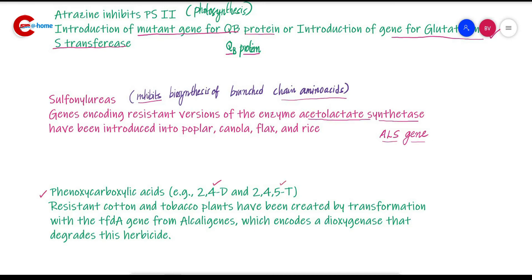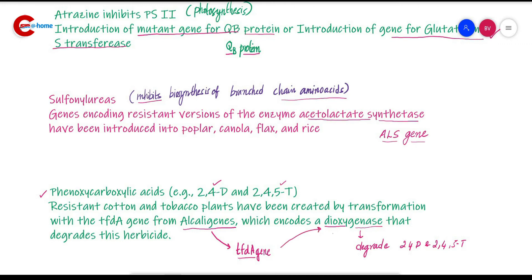Next is phenoxycarboxylic acid, that is 2,4-D and 2,4,5-T. Here we can incorporate a dioxygenase gene, the tfdA gene obtained from Alcaligenes, which produces dioxygenase that degrades the phenoxycarboxylic acid herbicide.